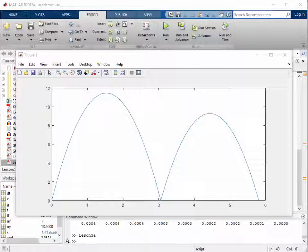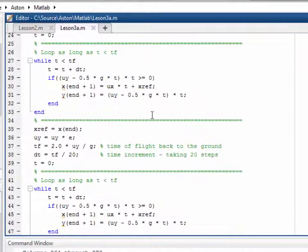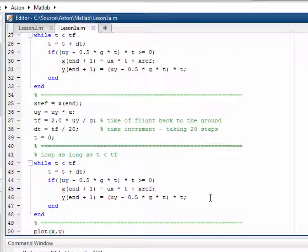In the last video, we plotted the trajectory of a ball being catapulted into the air, reaching its maximum height, falling back down to ground, then bouncing again. To do this, we used effectively the same loop twice: one loop for the catapult and one loop for the first bounce.